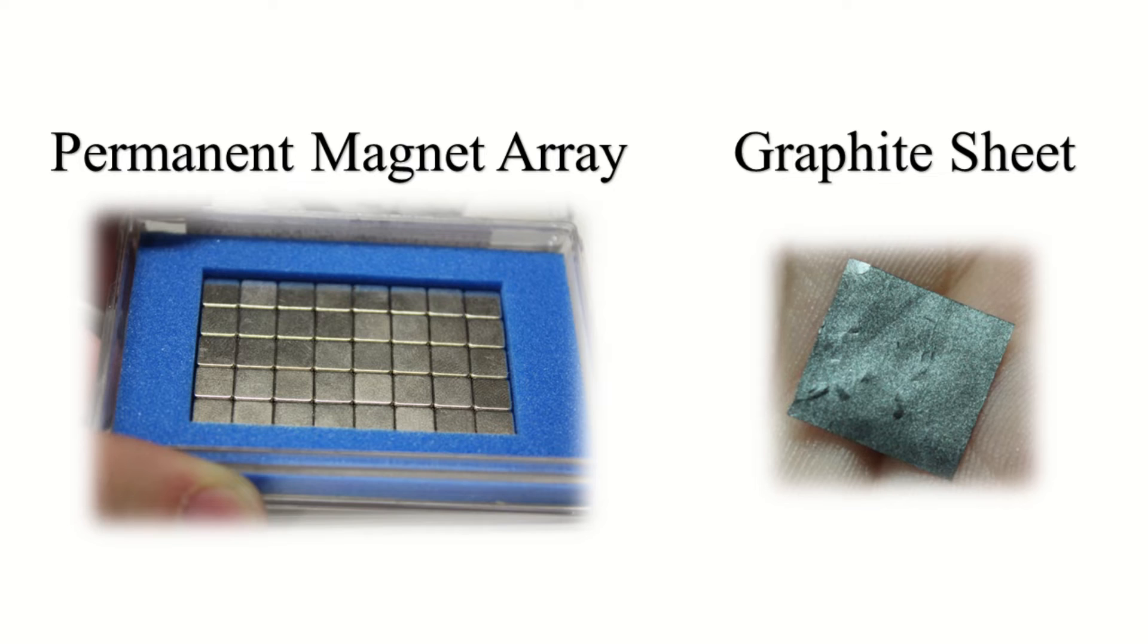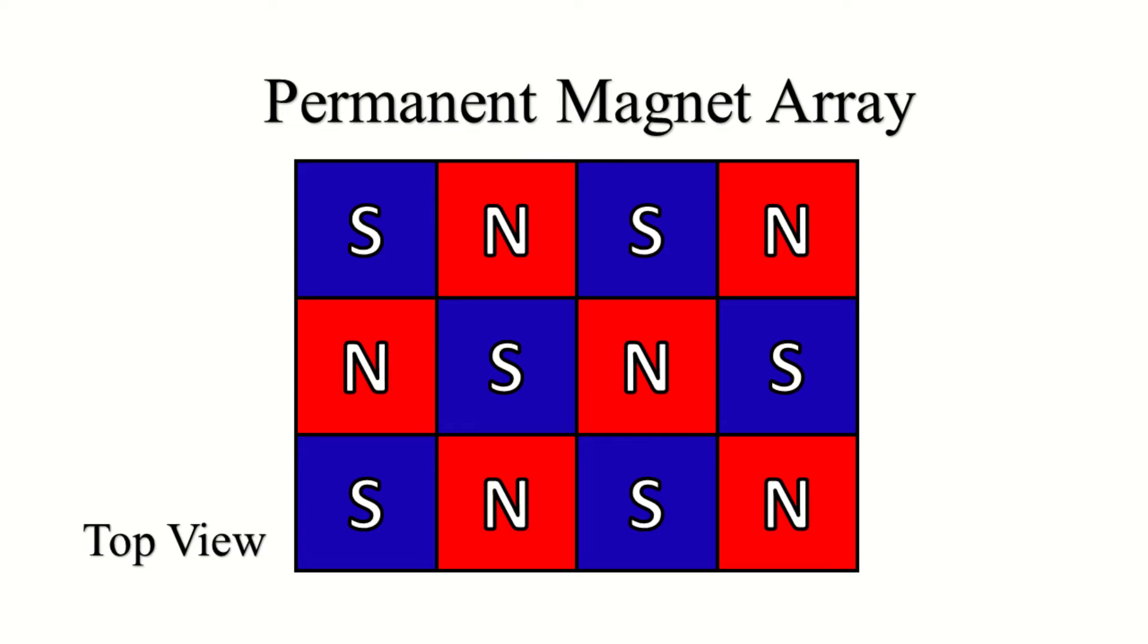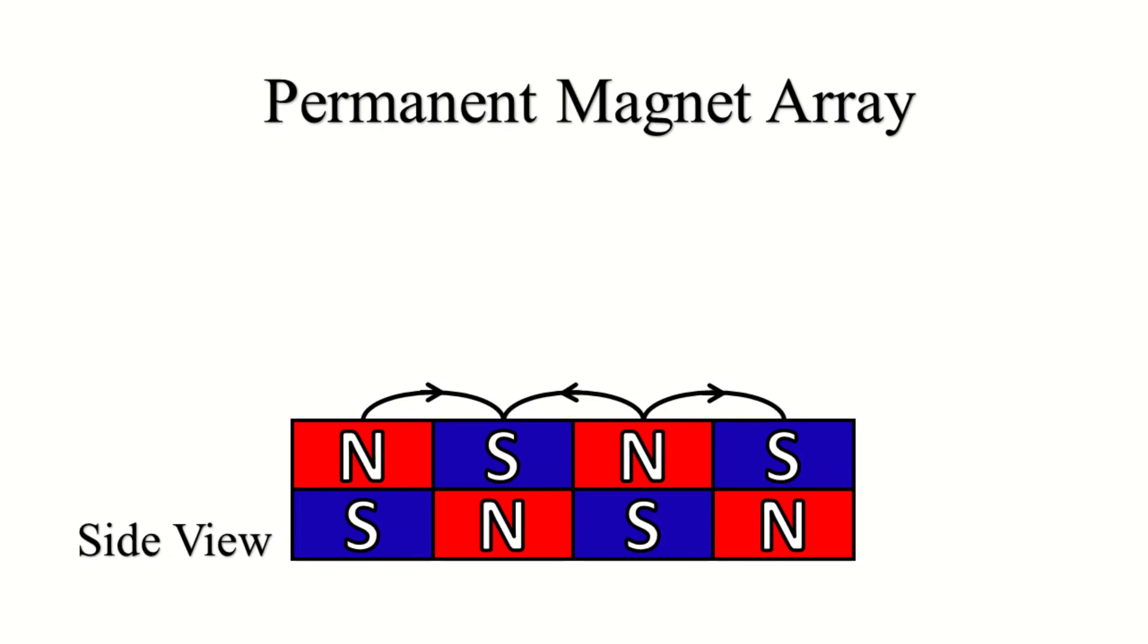This is today's experimental setup. It is an array of permanent magnets with alternating polarization. This arrangement forms a strong magnetic field near the permanent magnets.